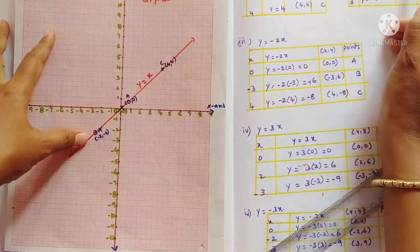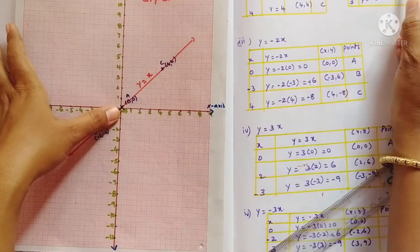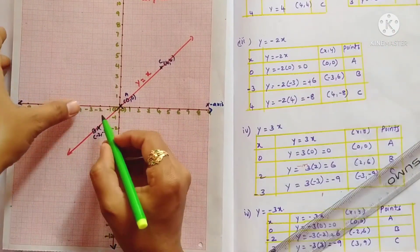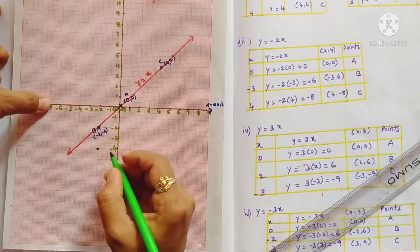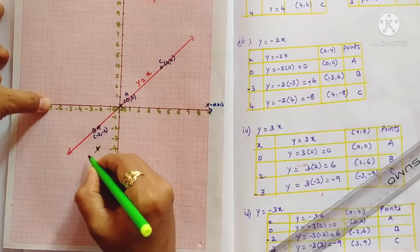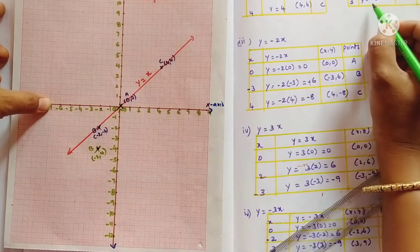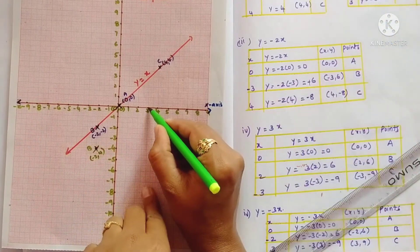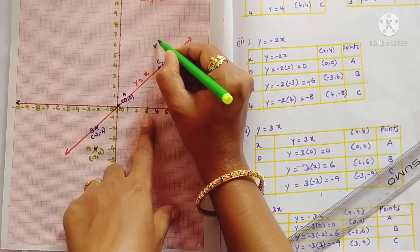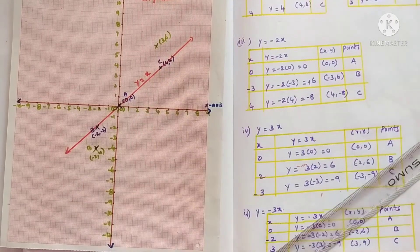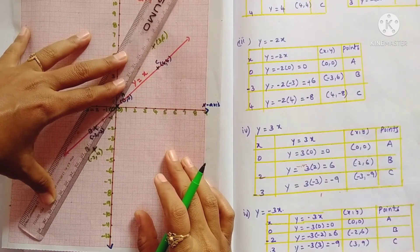For the second graph, y = 2x: point A is (0, 0), point B is (-2, -4) — x is -2 and y is -4. Point C is (3, 6) — 3 on the x-axis and 6 on the y-axis. Take the scale and join these three points.